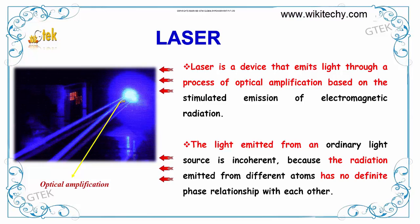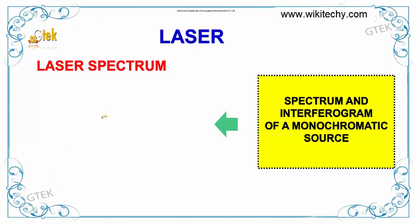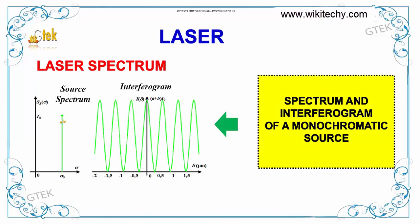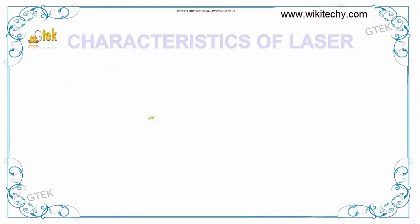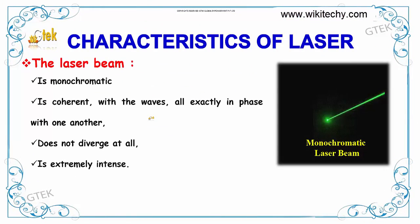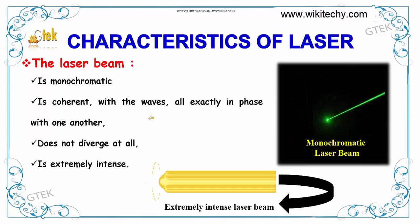Because the radiation emitted from different atoms has no definite phase relationship with each other. We'll talk about laser spectrum. This is the source spectrum and this is the interferogram spectrum. An interferogram of a monochromatic source is shown here.